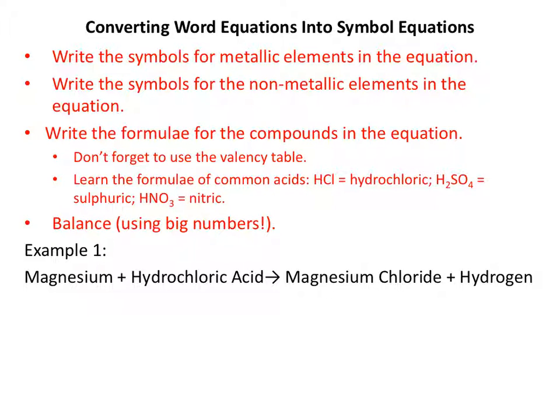Now I'm going to give you five examples of equations. I want us to write the symbol equations from the word equations using the following steps. We're going to write out the symbols for the metallic elements in the equation. We're going to write the symbols for the non-metallic elements in the equation. Once we've sorted the elements, then we move on to the compounds. We write the formulae for the compounds in the equation.